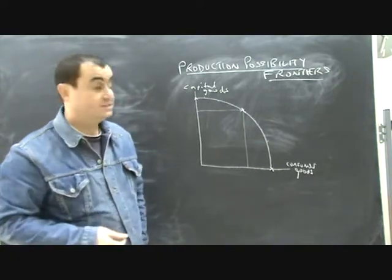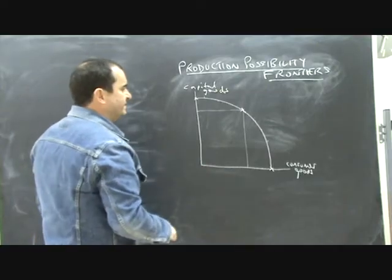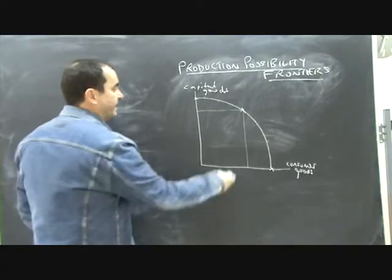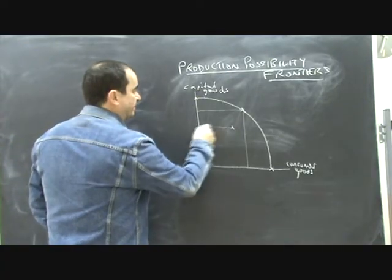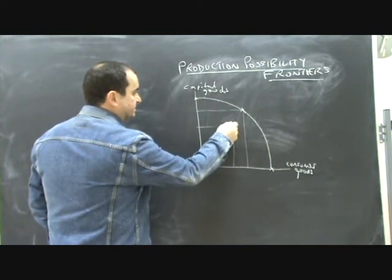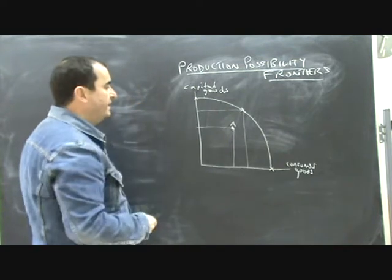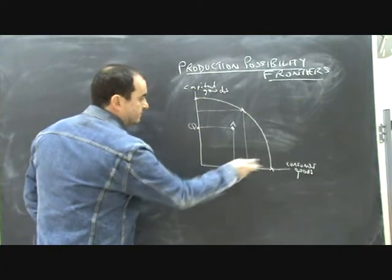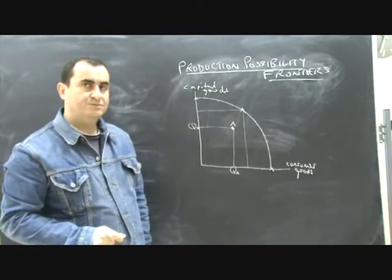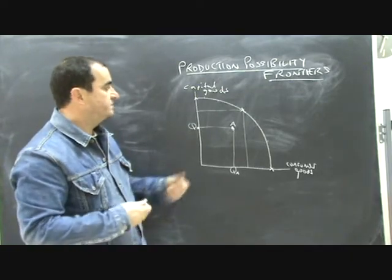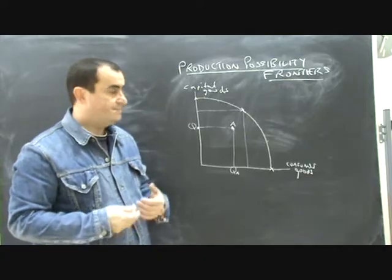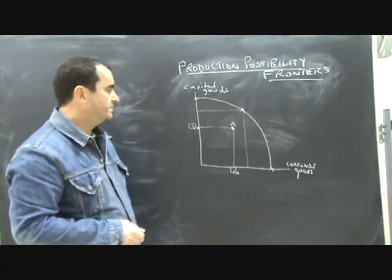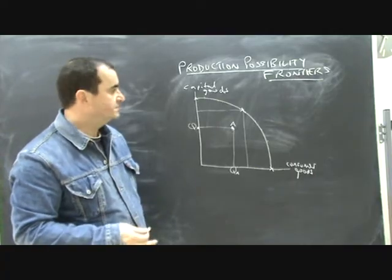Now, perhaps more likely is that in fact not all resources get used. There is unemployment in a society and perhaps only a combination of capital and consumer goods, let's call this A, is being made with quantity A capital goods, quantity A of consumer goods, and this would represent an output for this economy which is beneath their potential. Clearly there's unemployment or underemployment in this economy and they could do better with their existing resources.